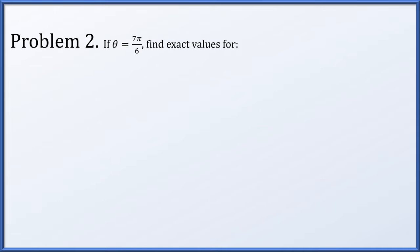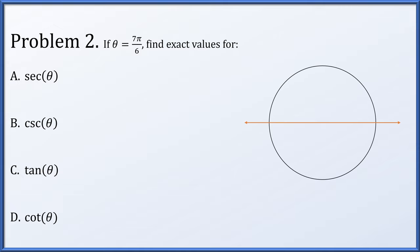In problem 2, we're given an angle theta of 7π over 6. We're going to find exact values for the secant, cosecant, tangent, and cotangent of the angle. Here's our unit circle with the x-axis drawn. The angle 7π over 6 is just a little bit larger than π — in fact, it's π over 6 larger than π, so here is our reference angle. This gives us an x coordinate of √3 over 2 and a y coordinate of 1/2, but we're in the third quadrant, so we make them both negative. The secant of theta is 1 over the x coordinate, so referring to our x coordinate of −√3/2 and reciprocating, we get −2 over √3.